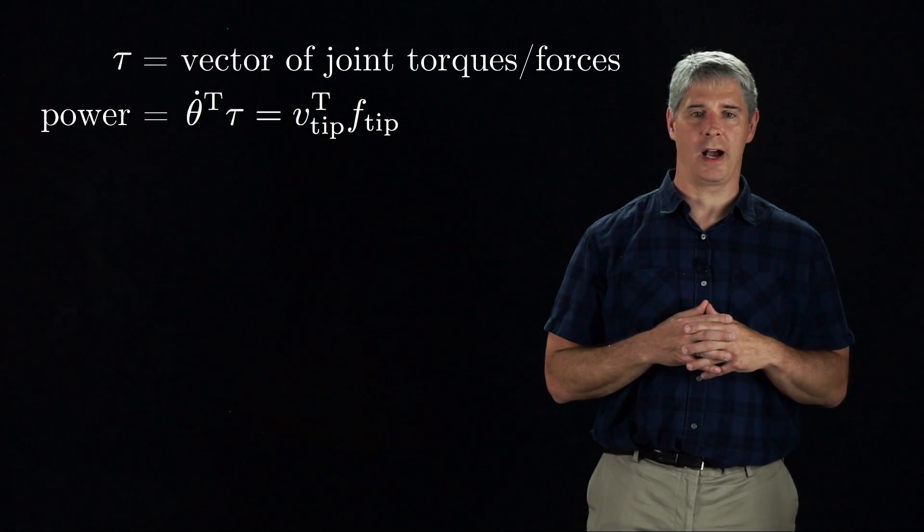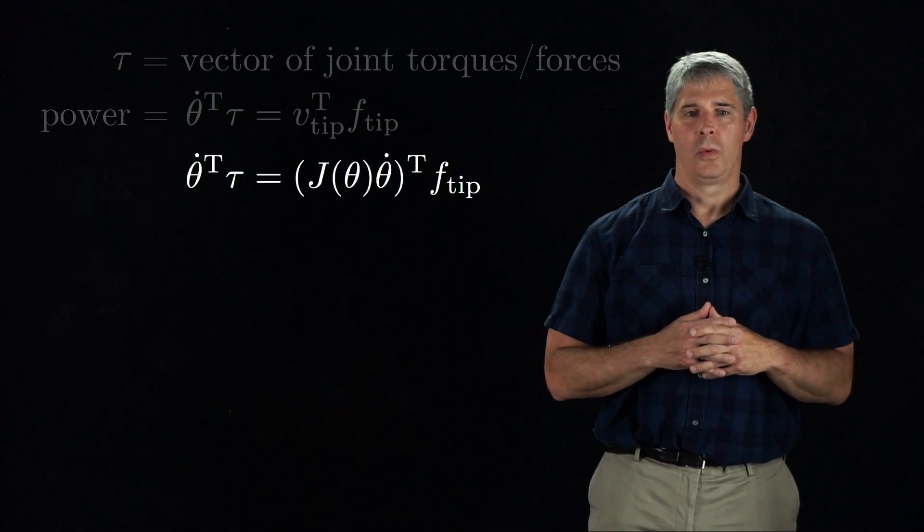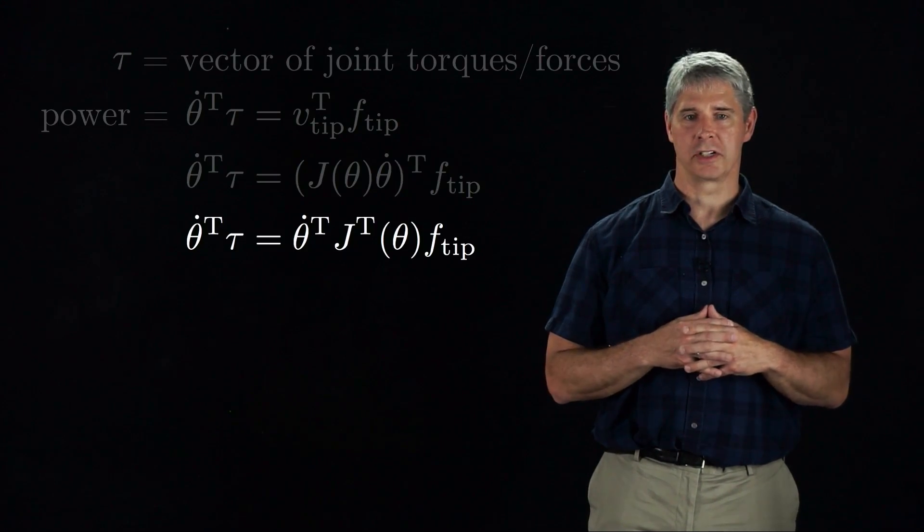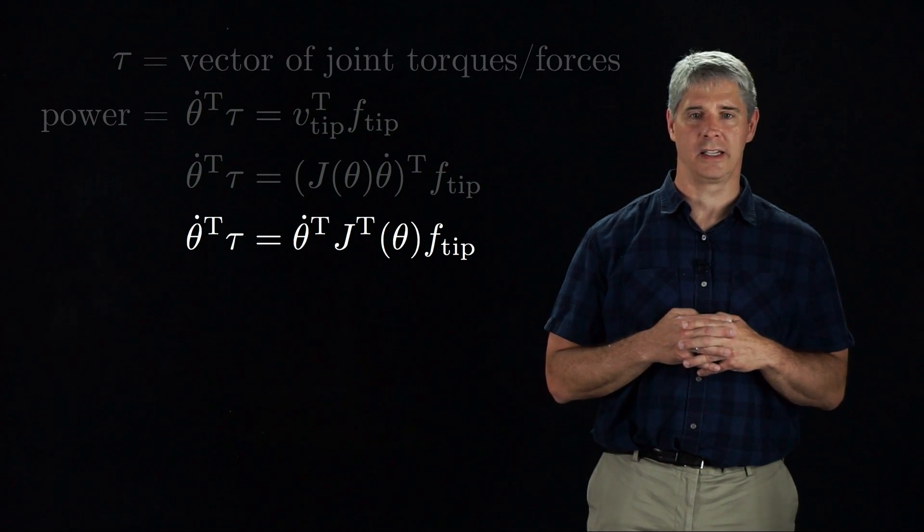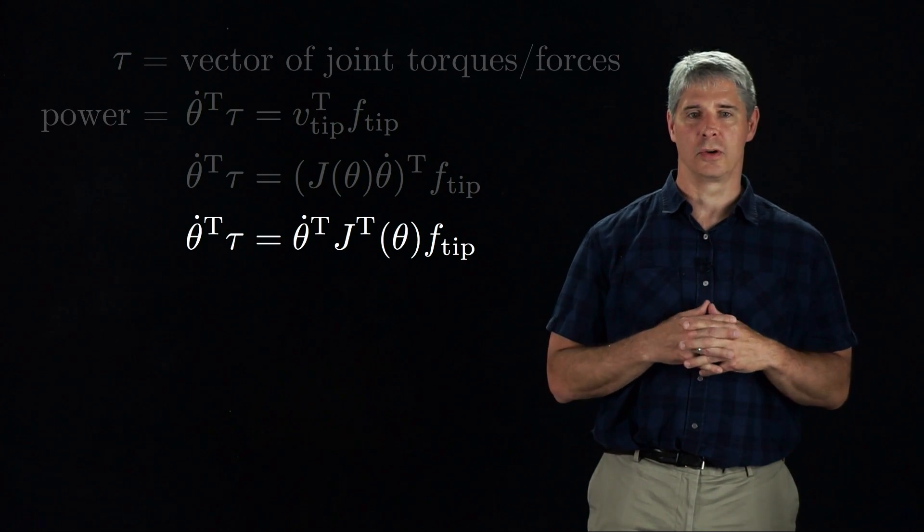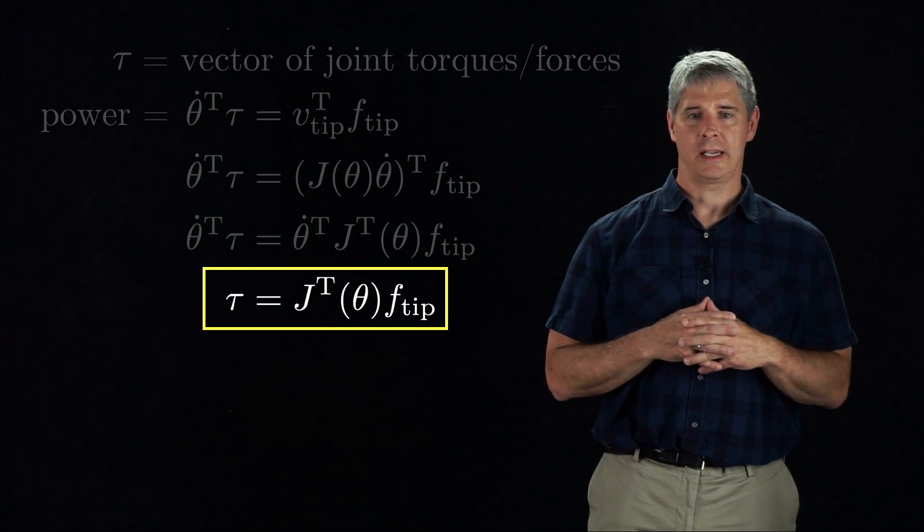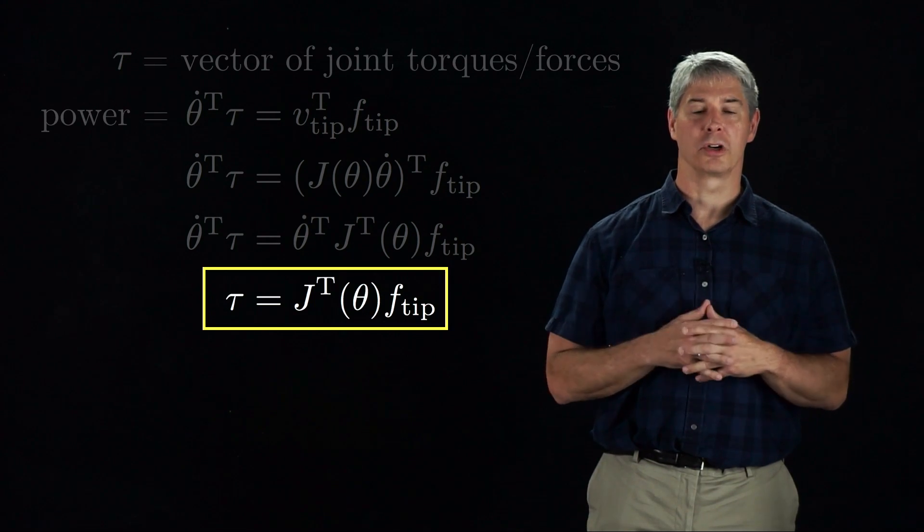Using our previously derived identity v-tip equals j theta dot, we get this equation. We can rewrite this using the fact that the transpose of j theta dot is equal to theta dot transpose times j transpose. Since this equation holds for all theta dot, the equation reduces to tau equals j transpose times f-tip, the relationship we were looking for.